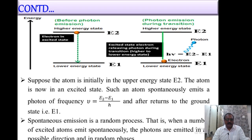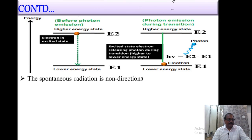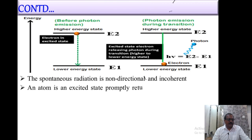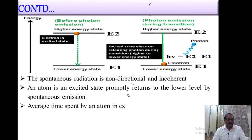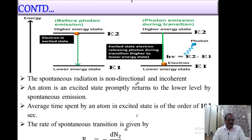Therefore, this spontaneous radiation is non-directional and incoherent. An atom in the excited state eventually returns to the lower level by spontaneous emission. The average time spent by an atom in the excited state is of the order of 10⁻⁸ seconds. The rate of spontaneous emission is given by Rsp = −dN2/dt = N2/τf, where τf is the lifetime of the spontaneous transition.